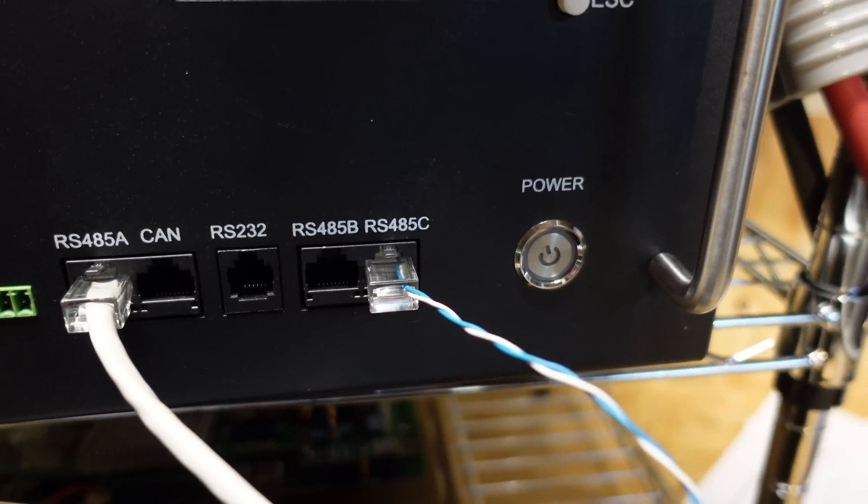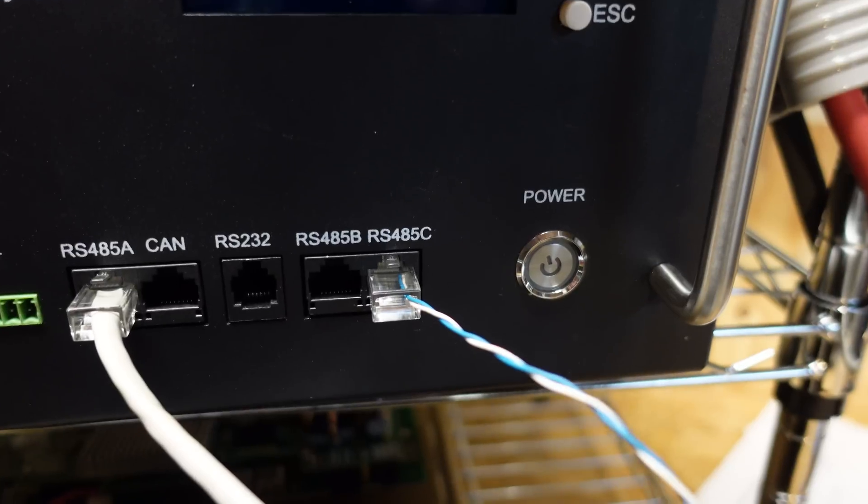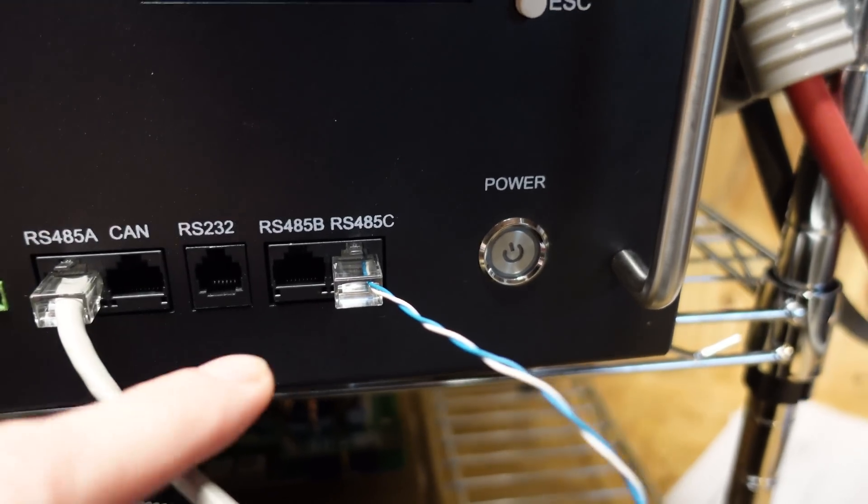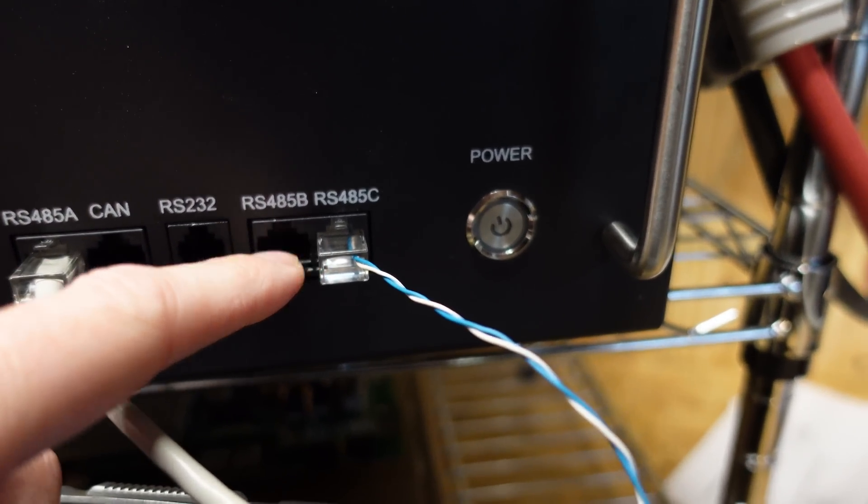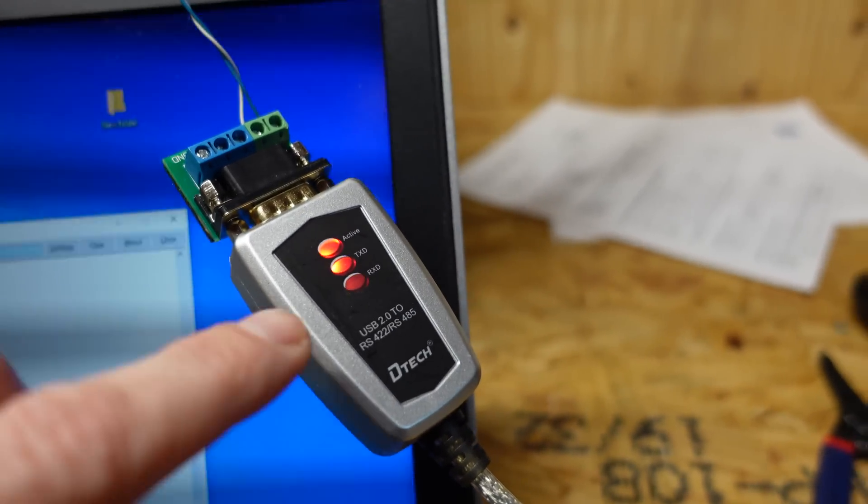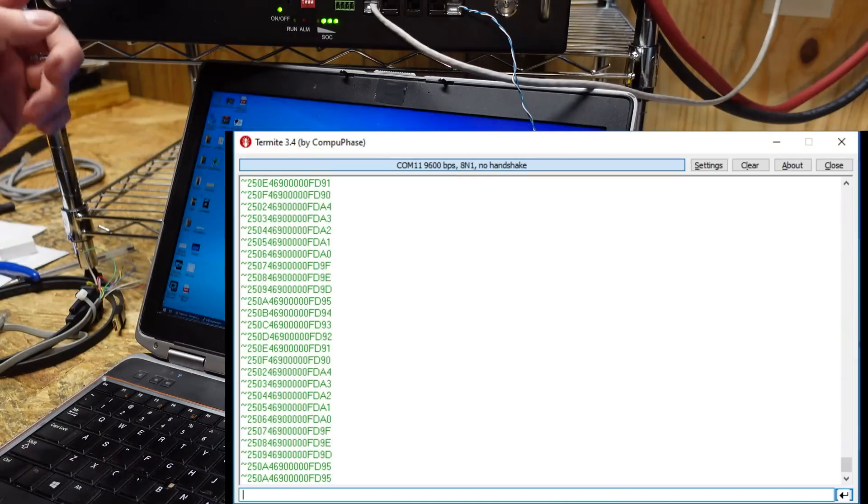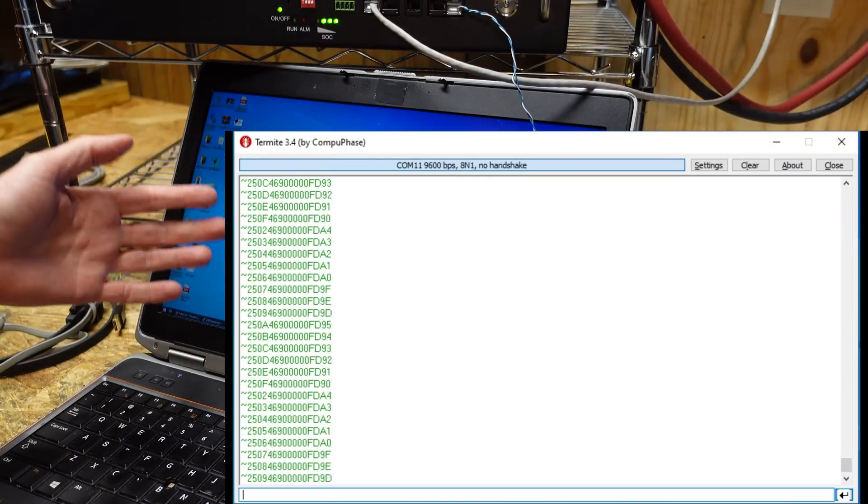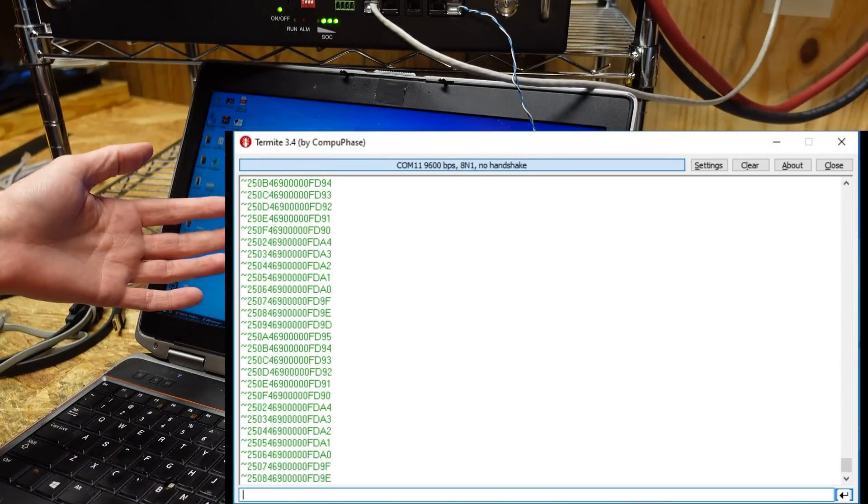All right. So, I've got it plugged into RS-485C just to demonstrate that the pinout of this cable, just to demonstrate that the pinout of the pins are correct. So, that's going down to this adapter. You can see the receive lights blinking. And on the screen here, we can see that it is clearly receiving data. So, we know the pinout there is correct.